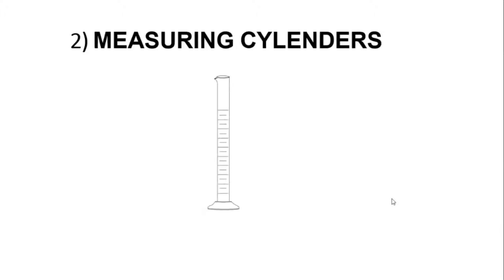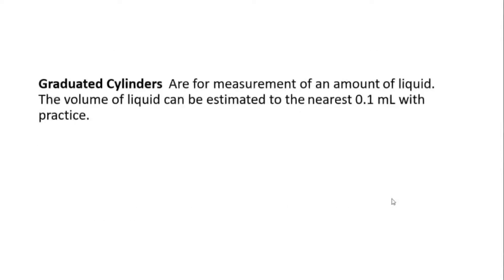Second, measuring cylinders. As you can see here on this picture, this is how measuring cylinders look like. Measuring cylinders, also called graduated cylinders, are for measurement of an amount of liquid. The volume of liquid can be estimated to the nearest 0.1 milliliter with practice.